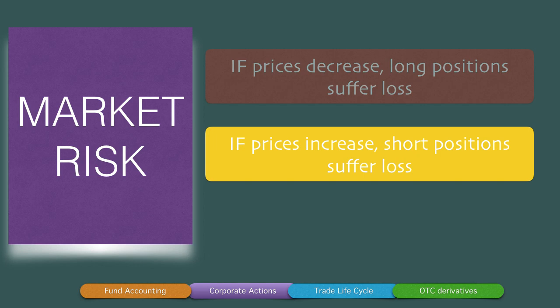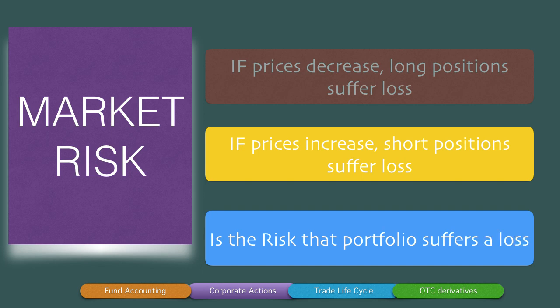If prices increase, the short positions suffer the loss. Since banks are large financial institutions, they are also allowed to take short trading positions. If they've shorted an asset and the price has increased, they will suffer a loss. Market risk is the risk that the entire portfolio of the bank suffers a loss. There are strict banking guidelines given by central banks across the world on how banks should manage their portfolio. Market risk is therefore the risk of maximum loss that the bank will suffer if an overnight position goes haywire.